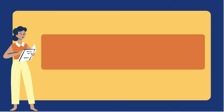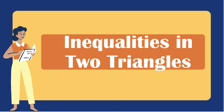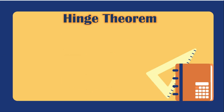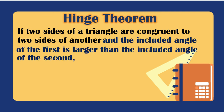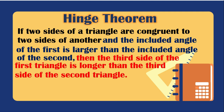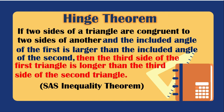Next is the inequalities in two triangles. Let's start with the hinge theorem. If two sides of a triangle are congruent to two sides of another and the included angle of the first is larger than the included angle of the second, then the third side of the first triangle is longer than the third side of the second triangle. We also call this the SAS Inequality Theorem.